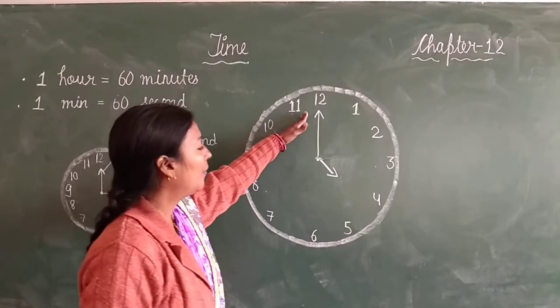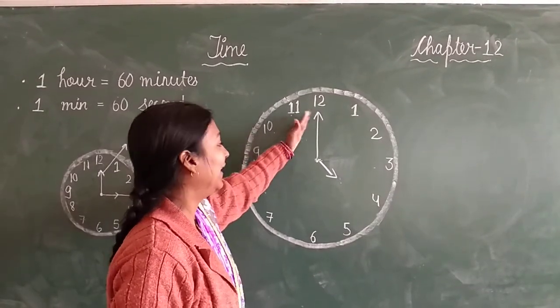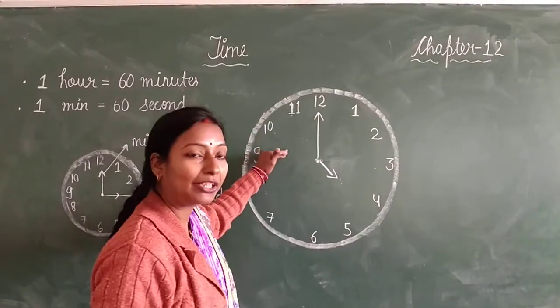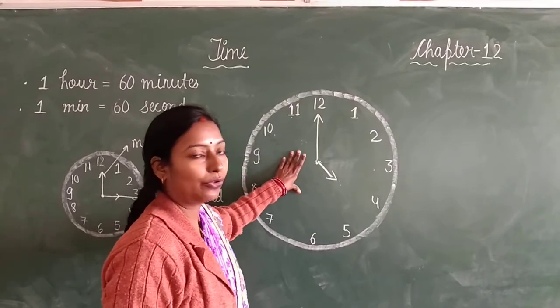Now, when the long hand is on 12 and the short hand is at any number, that is called the same o'clock.